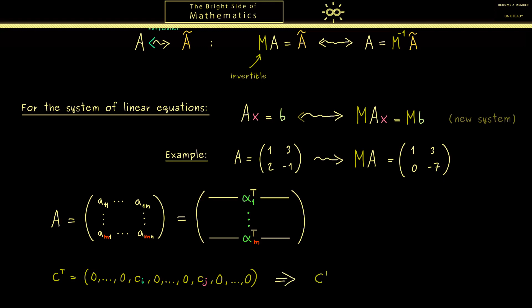The result we get is a linear combination of the rows of A. However, since there are only two non-vanishing entries for c, we only get the sum of two rows: c_i times alpha_i transpose plus c_j times alpha_j transpose. In other words, we now have a procedure for adding rows by just using the matrix product. The overall idea is to use such vector c transpose as the rows of the matrix M.